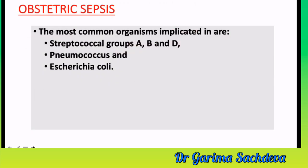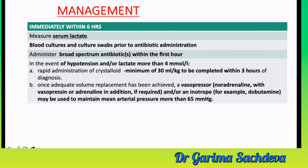For obstetric sepsis, the most common organisms are Group A, B, and D Streptococcal, pneumococcus, and E. coli. The Sepsis 6 bundle should be applied within 6 hours. This table is very important and has been asked multiple times in exams.